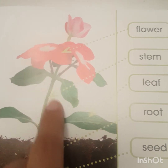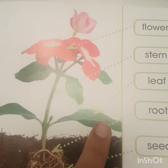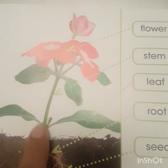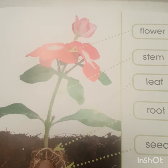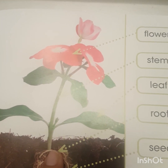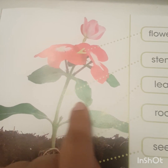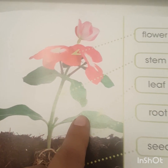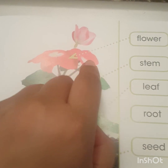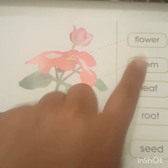Above the ground I see a leaf and the stem, which is this long green — it looks like a straw — but it's actually what holds the leaf and what holds a flower. And on the top of the plant here is a flower.